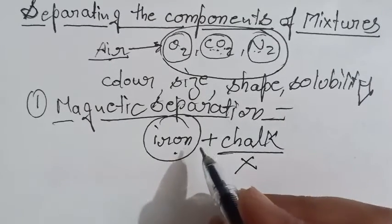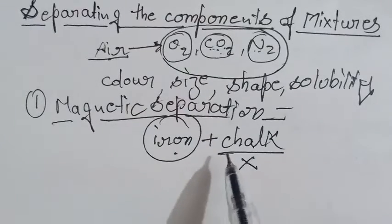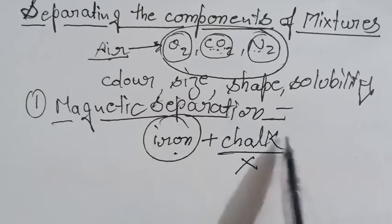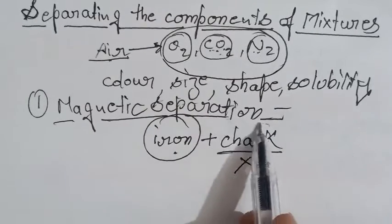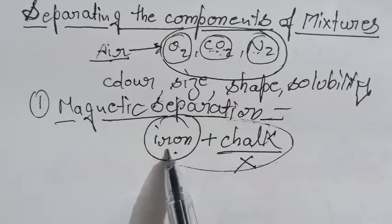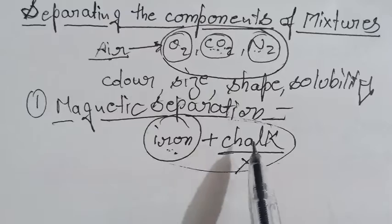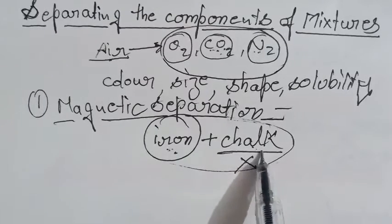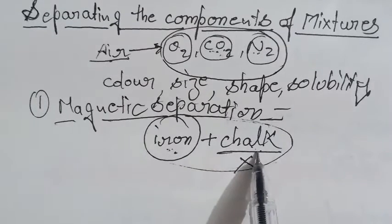When we bring a magnet towards this mixture, iron and chalk mixture, all the iron particles will get attracted towards the magnet whereas chalk will be left behind.